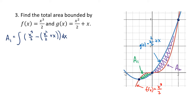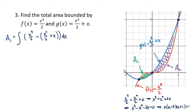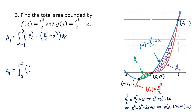To find the bounds, we find all three intersection points by setting the two functions equal: x cubed over 2 equals x squared over 2 plus x. Multiplying both sides by 2 and moving everything to the left gives x cubed minus x squared minus 2x equals 0. Factoring gives x(x minus 2)(x plus 1) equals 0, so the three intersection points have x values of negative 1, 0, and 2. A1 goes from x equals negative 1 to x equals 0, and A2 goes from 0 to 2 with g on top and f on the bottom.